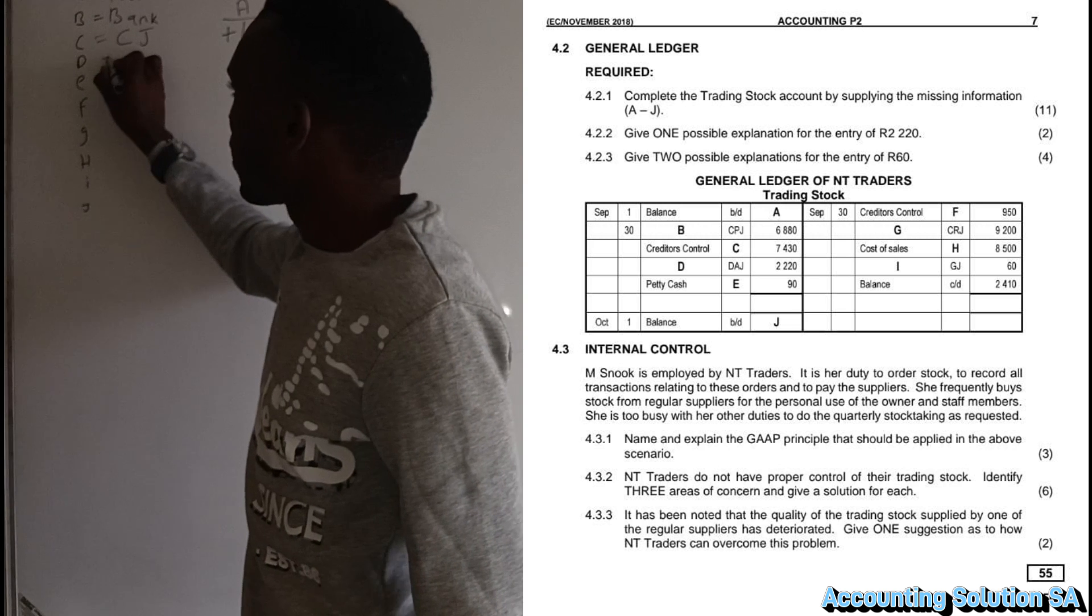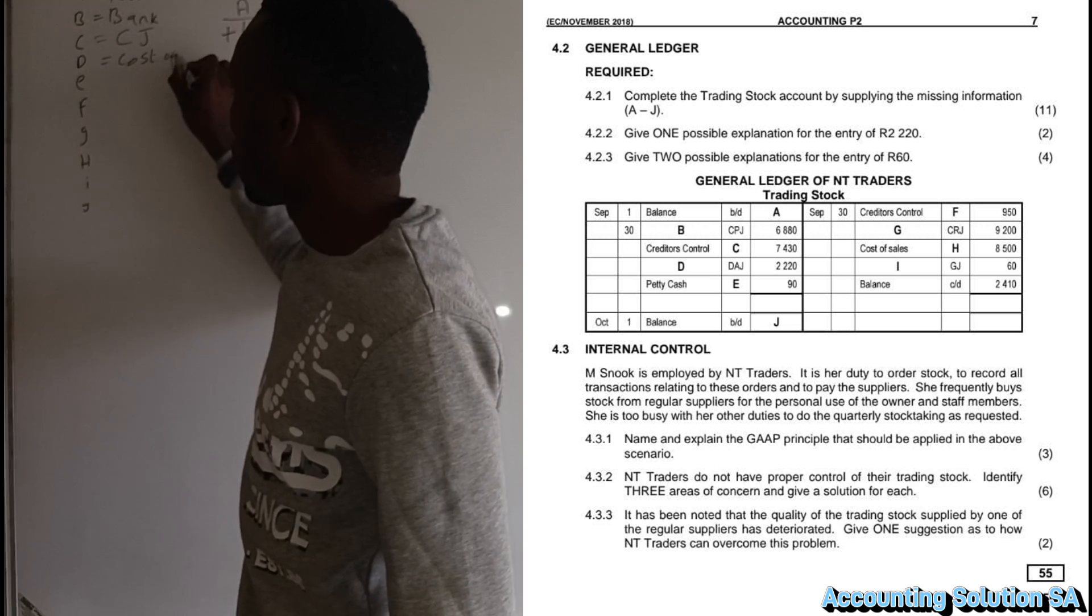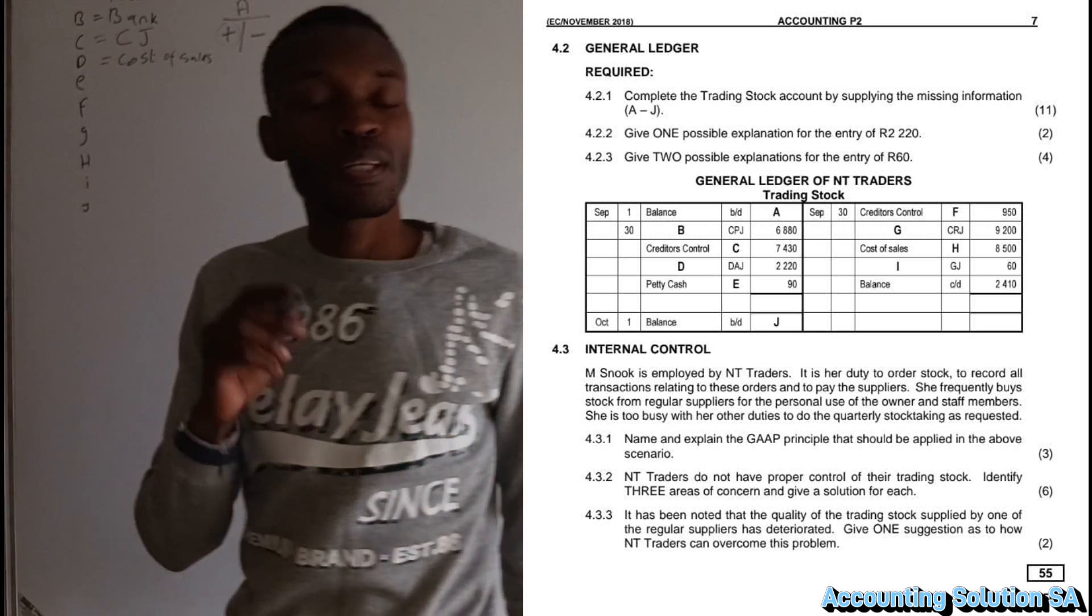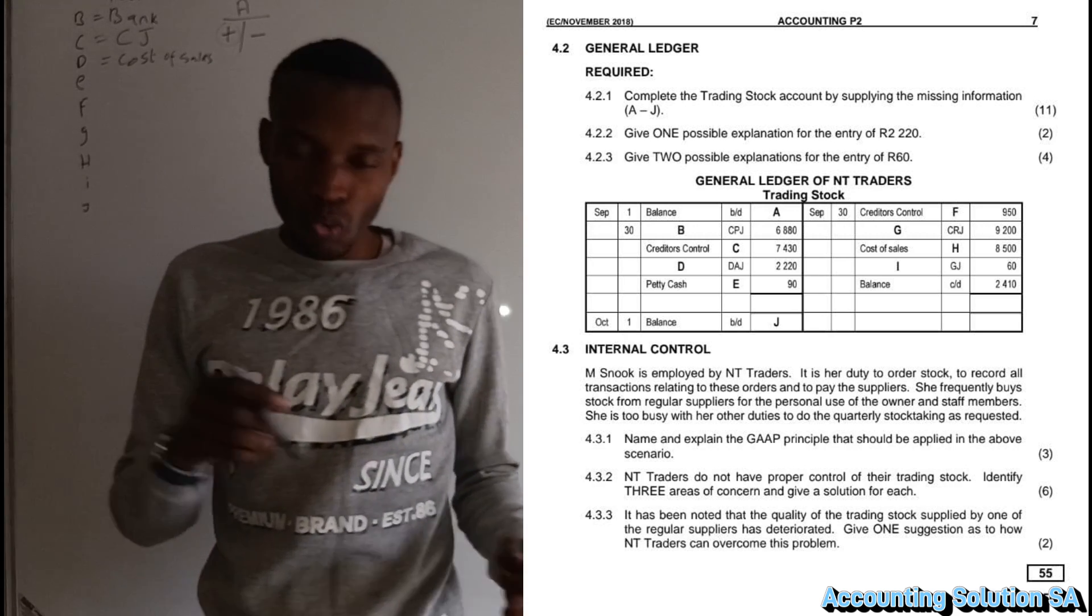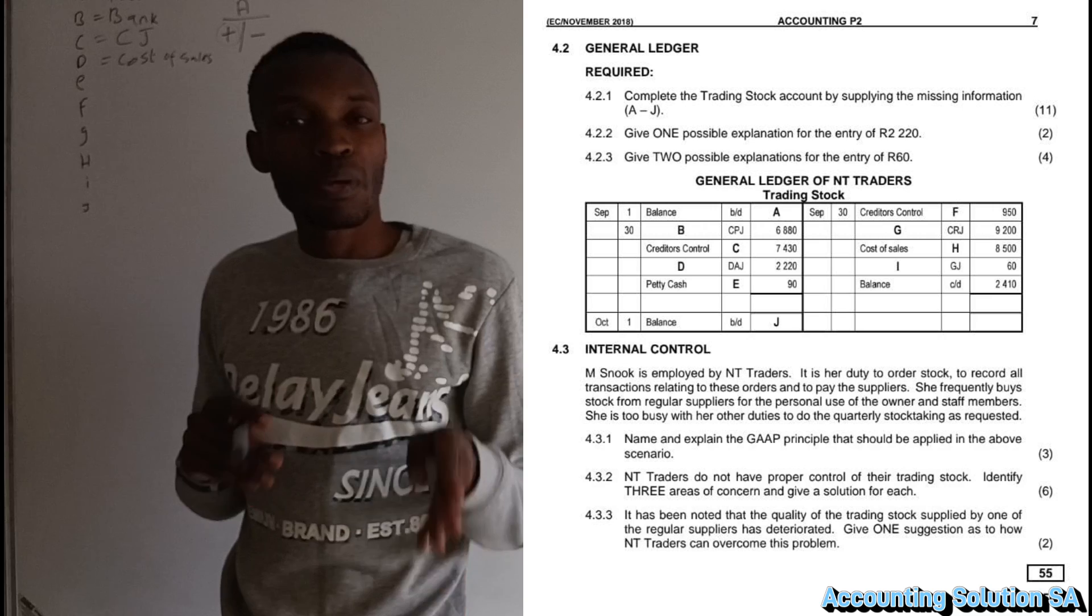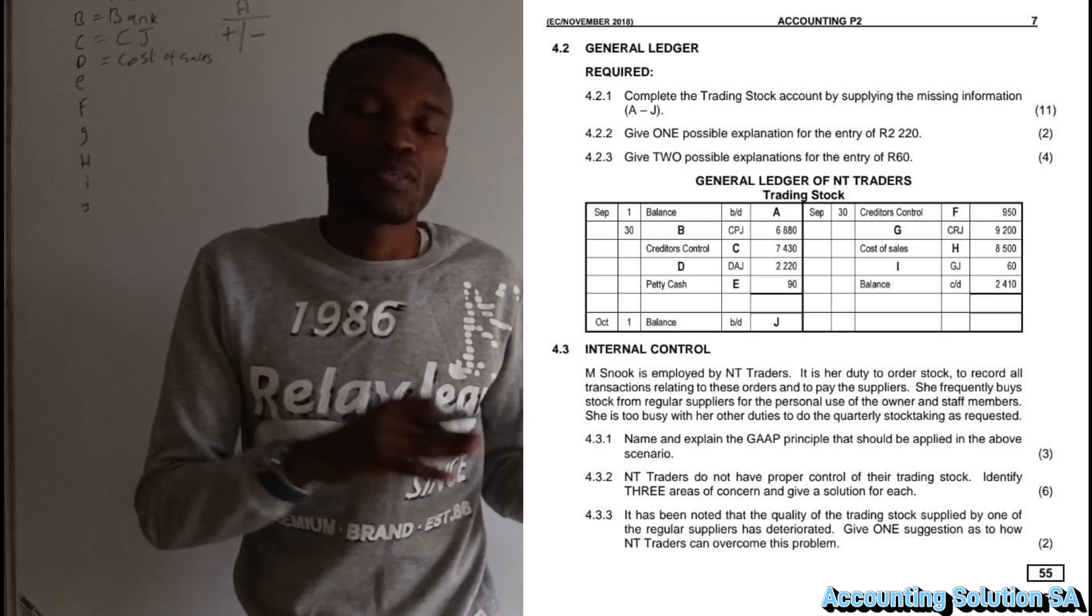Which means that in this case, cost of sales has been affected. It's the one that we have to record. Cost of sales is increasing the account of trading stock because the client has returned goods. We can't write sales under this account. We are talking about inventory. Under inventory account, we only have cost of sales, not sales.